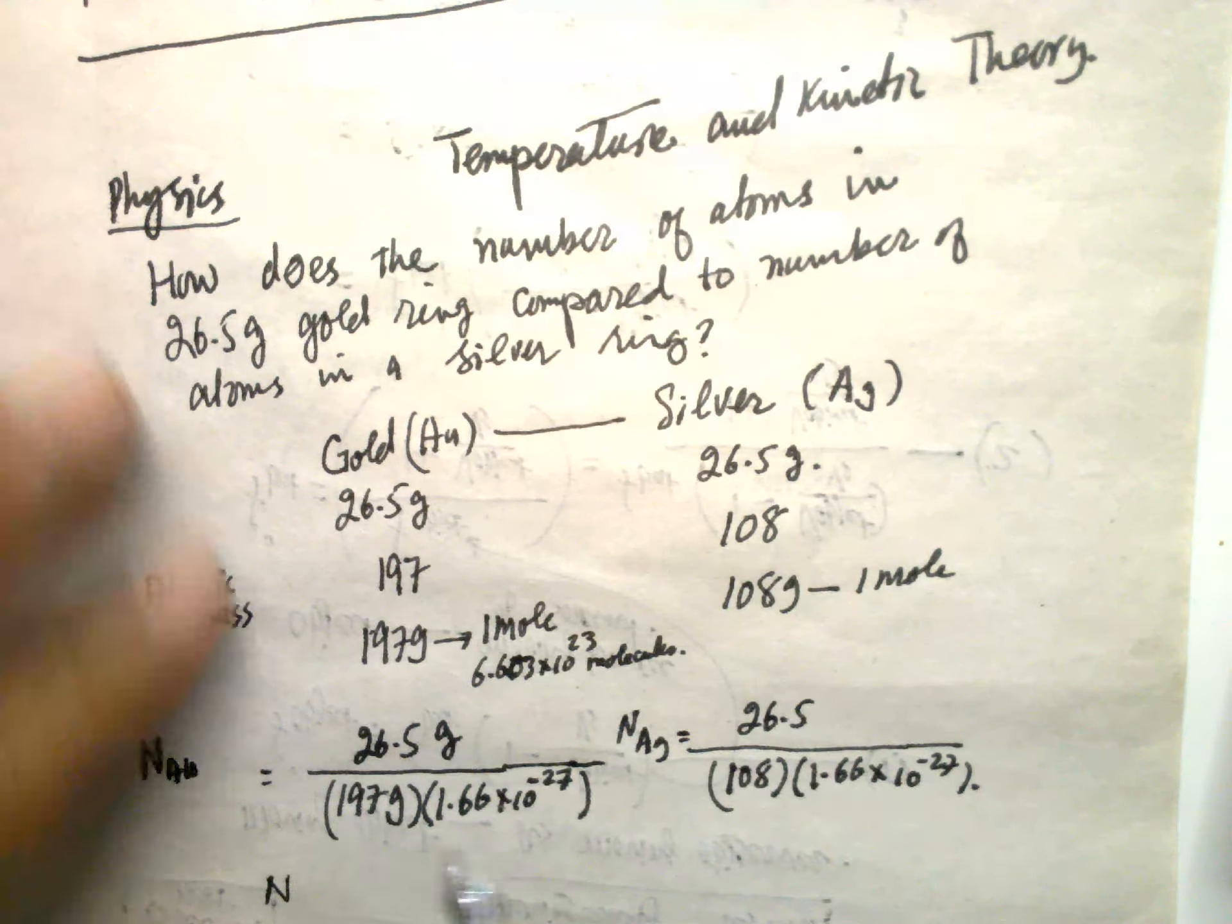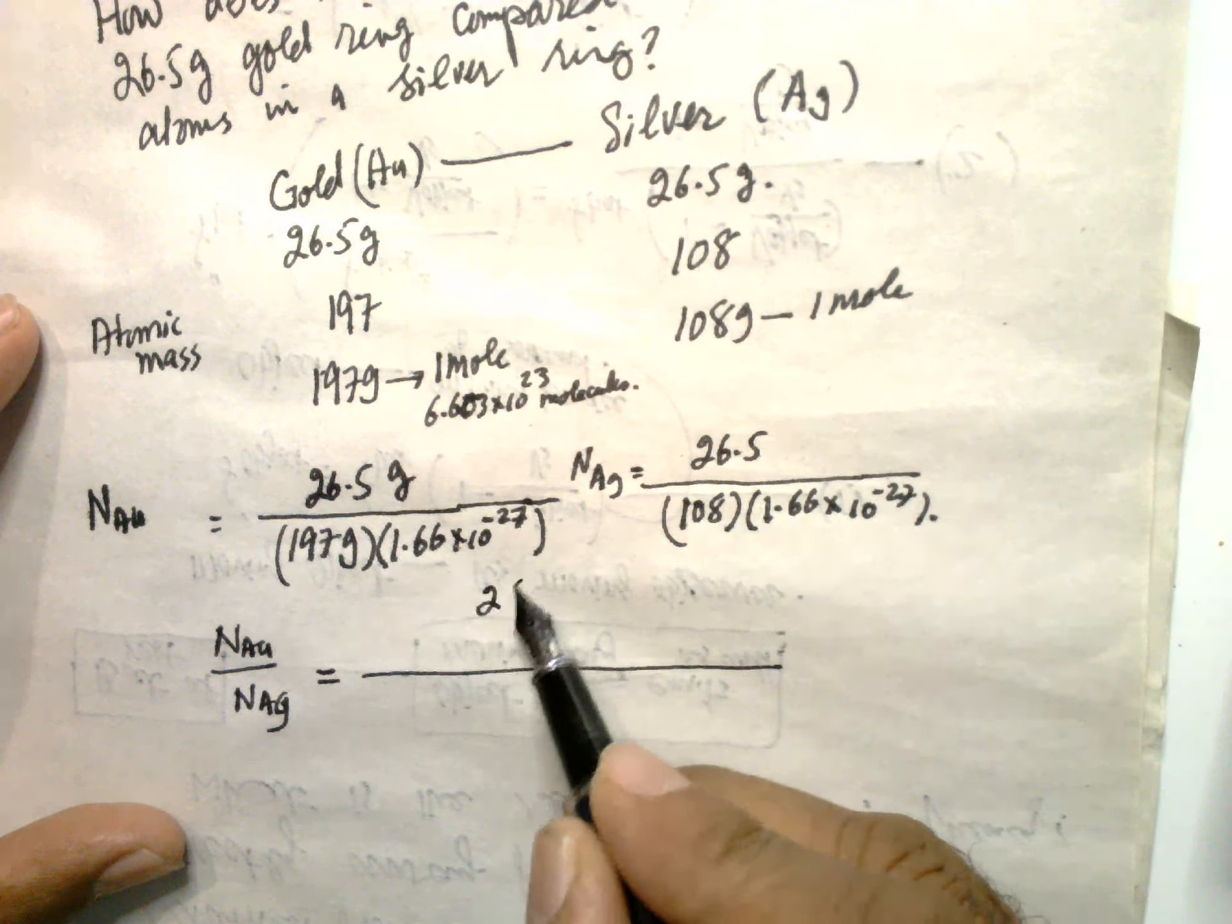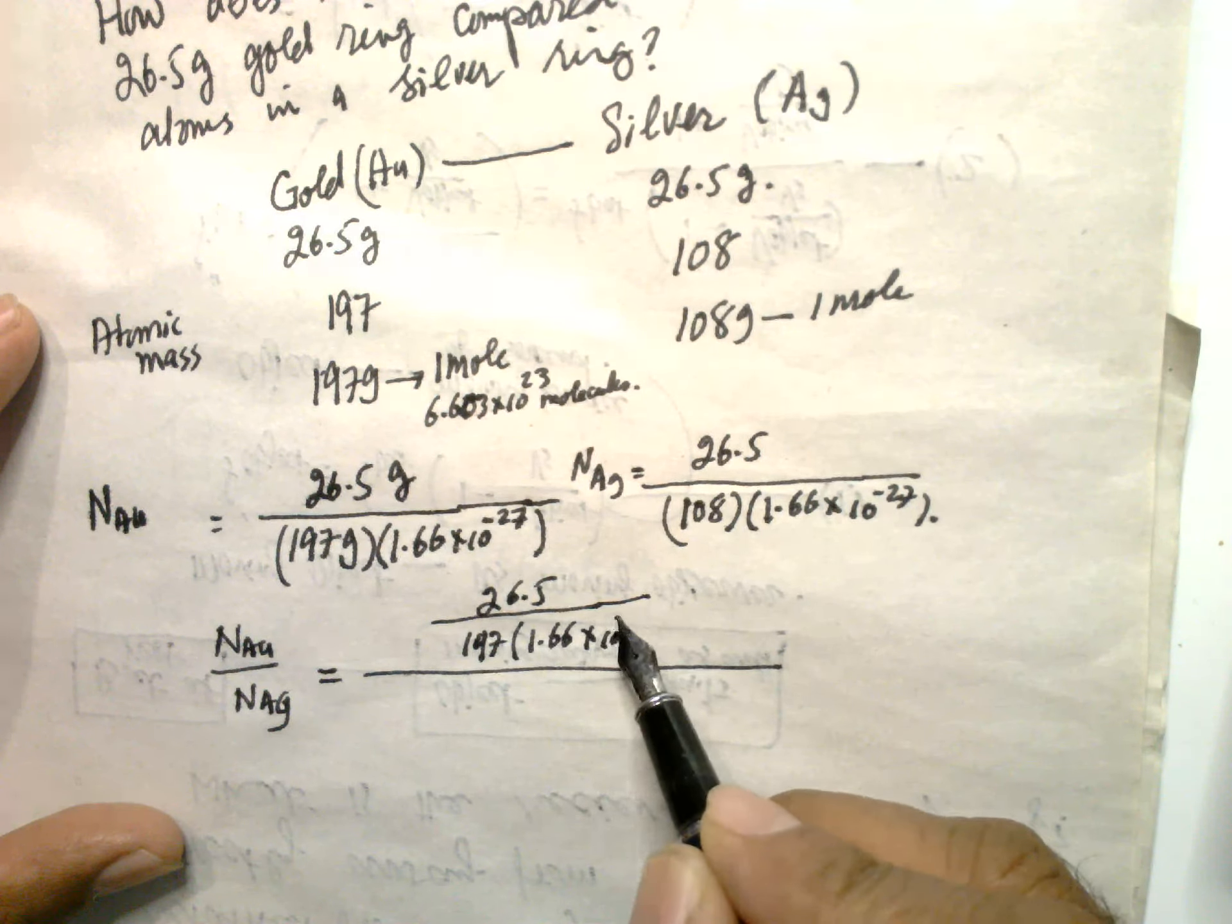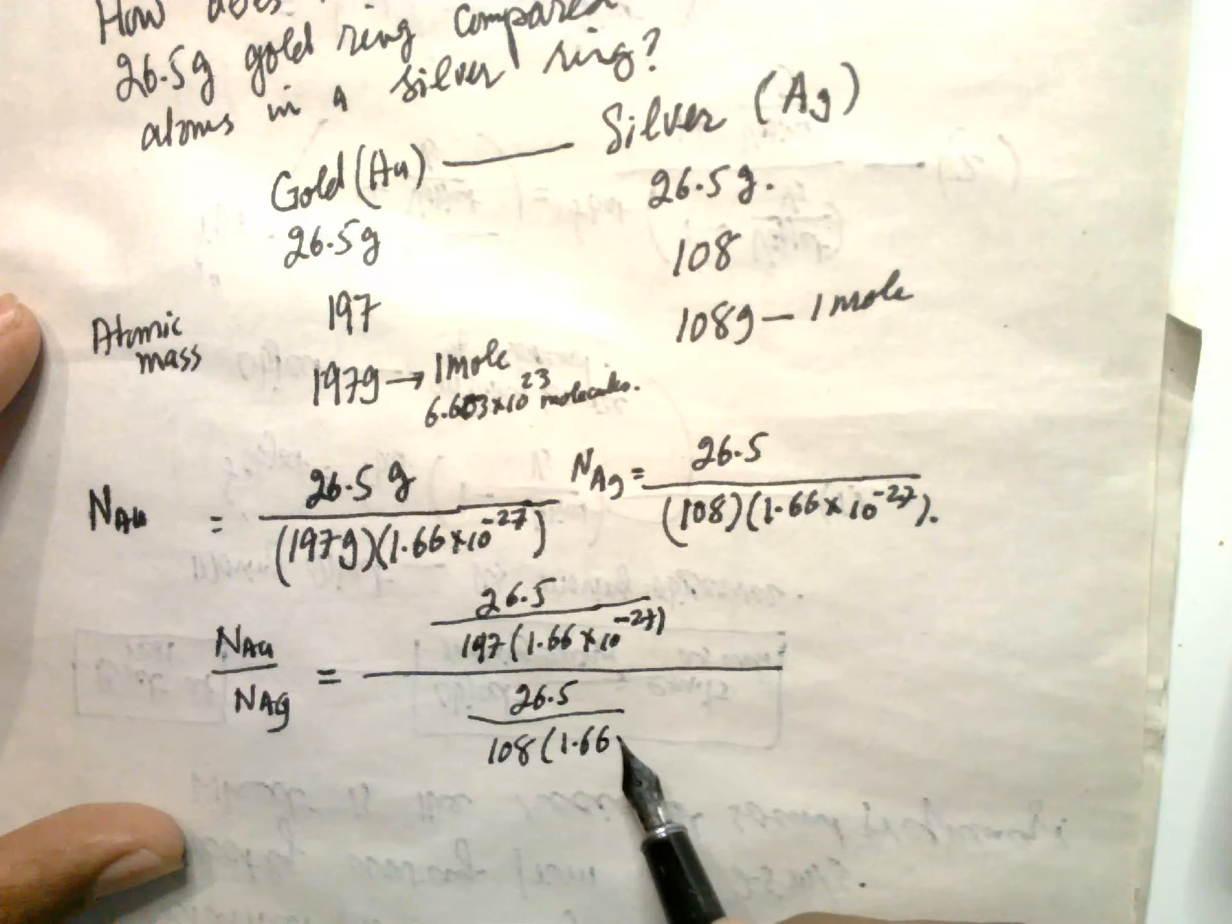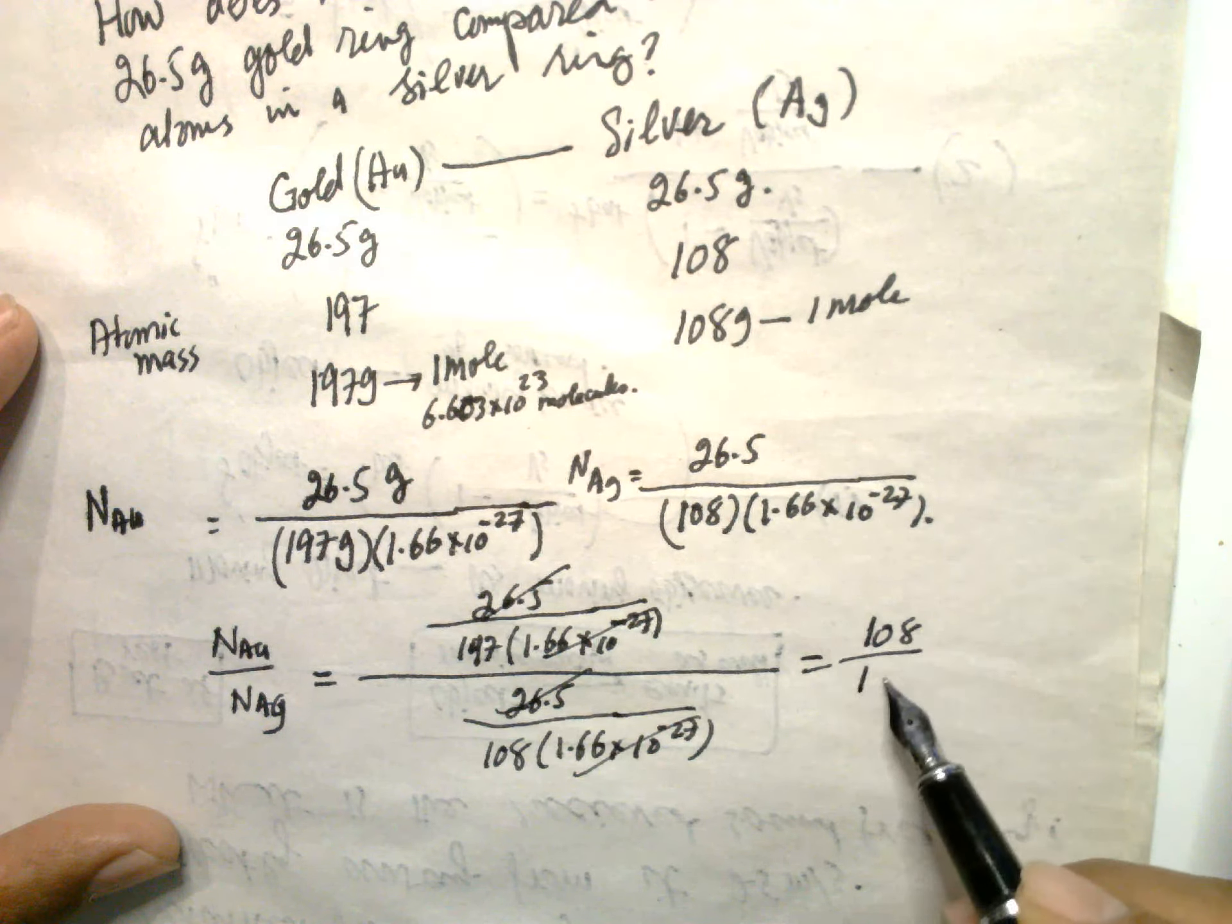So N of Au over N of Ag. You can see, this 26.5, 197, 1.66 times 10 to the power minus 27, divided by 26.5, 108, 1.66 times 10 to the power minus 27. This, this, this is cancelled. So that will be 108 over 197.